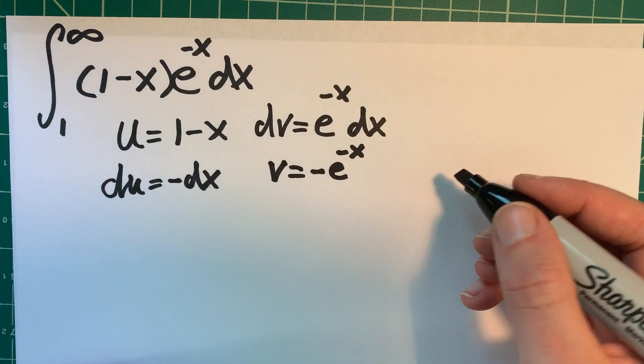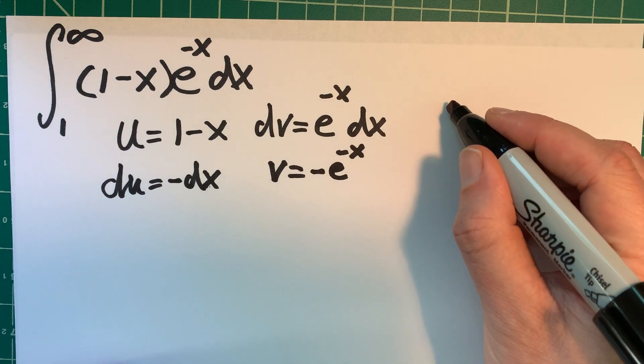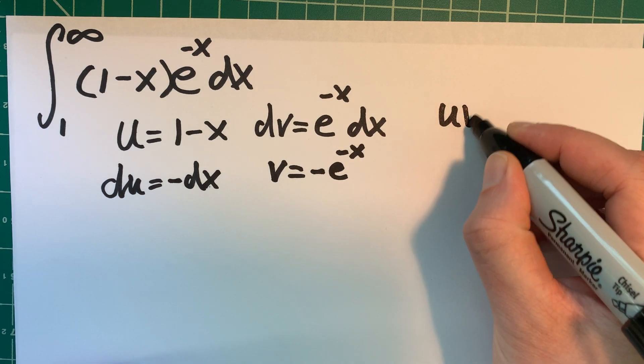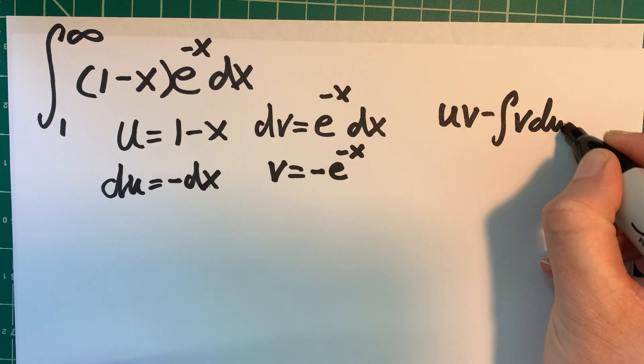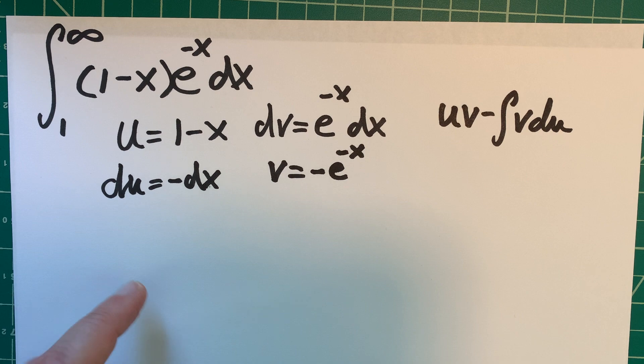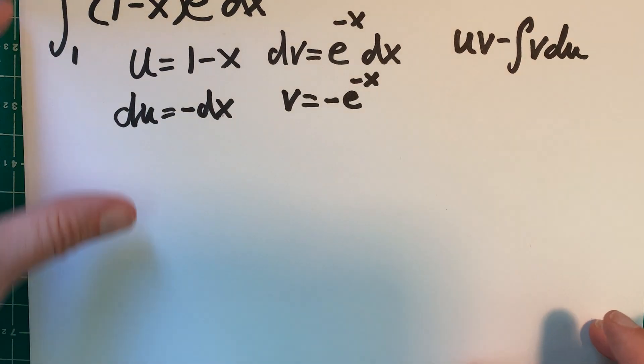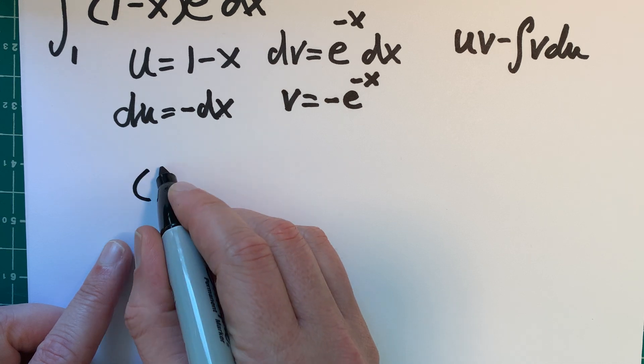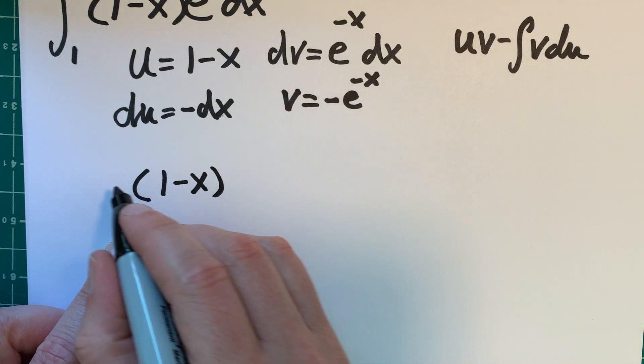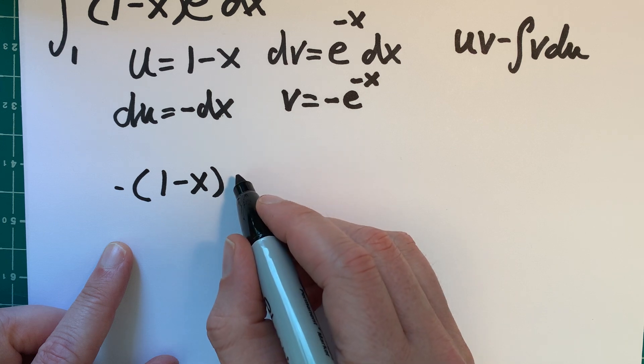So the formula, uv minus v du. Okay. I have all my pieces now, so I'm going to try to put it together. Let's see. So u, I have as 1 minus x. V, I have as negative, so I'll put a negative here.